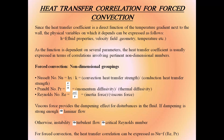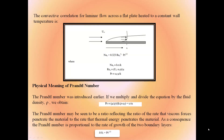The viscous force provides a dampening effect for disturbances in the fluid. If dampening is strong enough, it leads to laminar flow; otherwise instability leads to turbulent flow and a critical Reynolds number. For forced convection, Nu is a function of Reynolds number and Prandtl number. The convective correlation for laminar flow across a flat plate heated to a constant wall temperature gives: NUx = 0.332 × √Rex × Pr^(1/3), where Nu = Hx/K, Re = ρUx/μ, and Pr = Cp×μ/K.